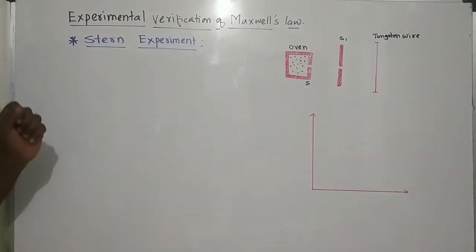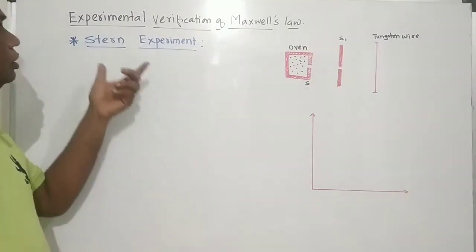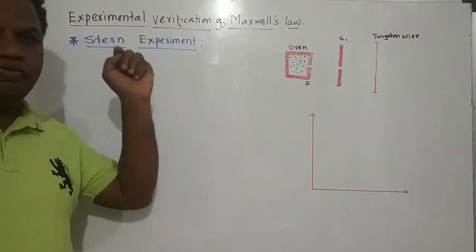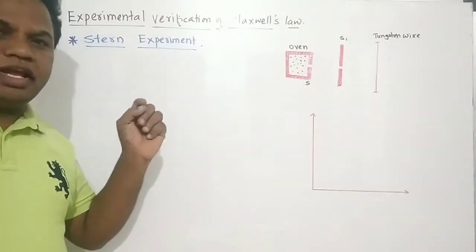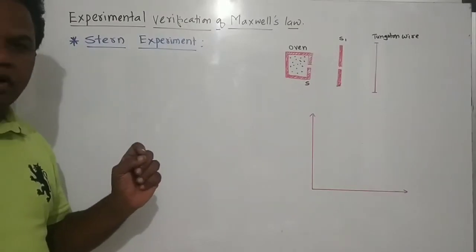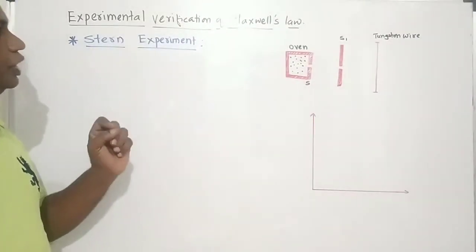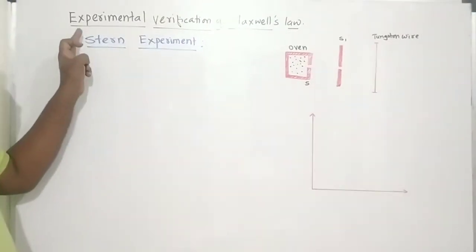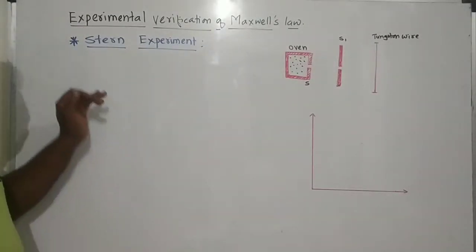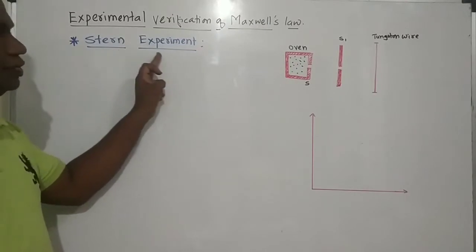For example, if we are interested in the experimental verification of Maxwell's law, one experiment was performed by Zhaadman and Koh. The other experiment we are interested in is the Stern experiment.